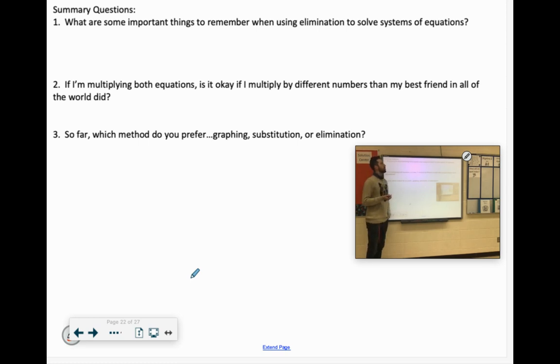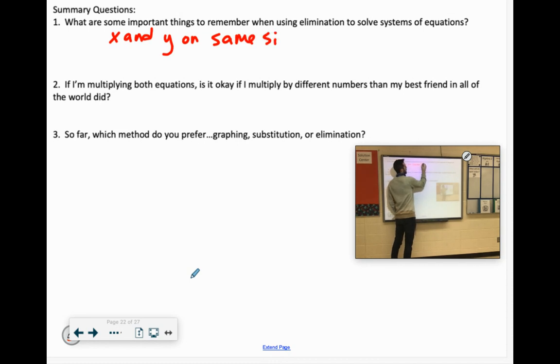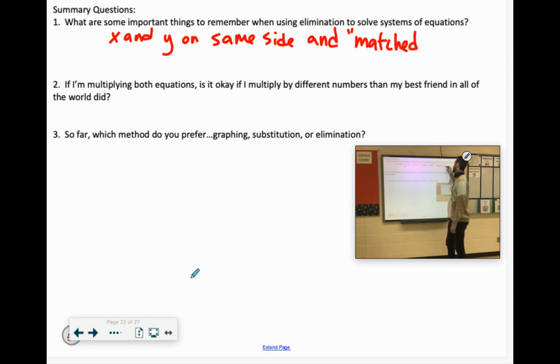What are some important things to remember when using elimination to solve systems of equations? You're going to want the x and y on the same side of the equal sign, and you're also going to want them matched up, which just means they're equal to each other. And again, you want one positive and one negative.